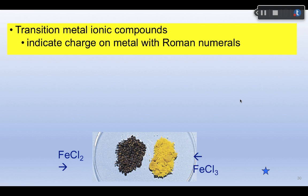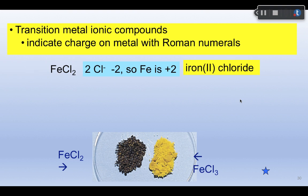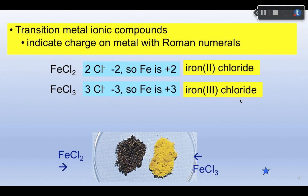When looking at transition metal ionic compounds, we must indicate the charge on the metal with Roman numerals. Here are two different iron compounds with chloride ions. For FeCl2, two chloride ions give a total of minus 2, so the iron must be plus 2 — the name is iron(II) chloride. For FeCl3, three chloride ions give a total of minus 3, so the iron must be plus 3 — the name is iron(III) chloride.